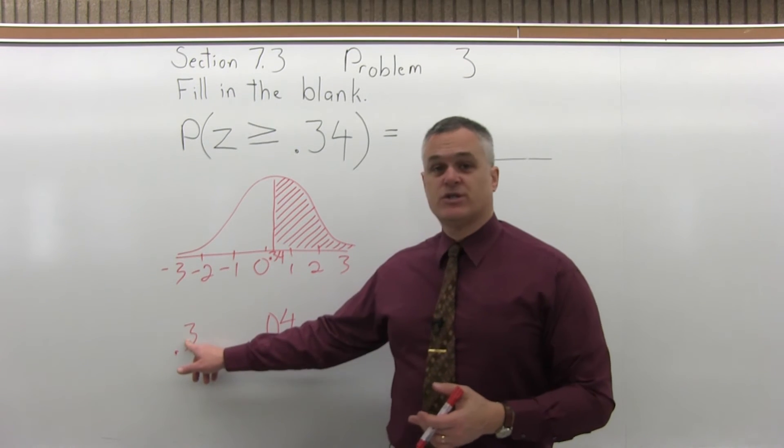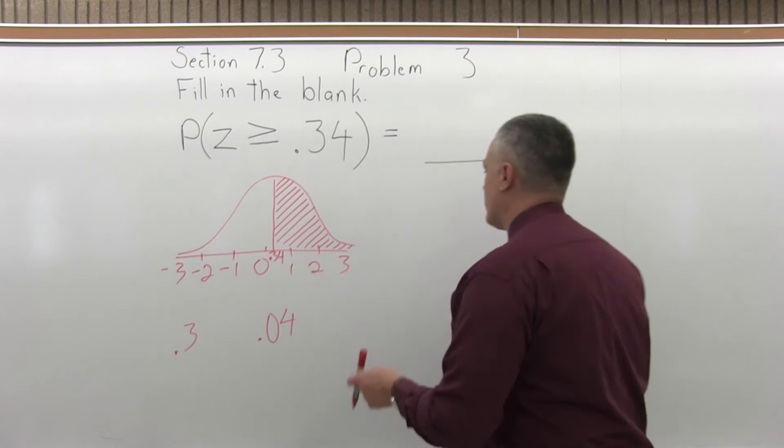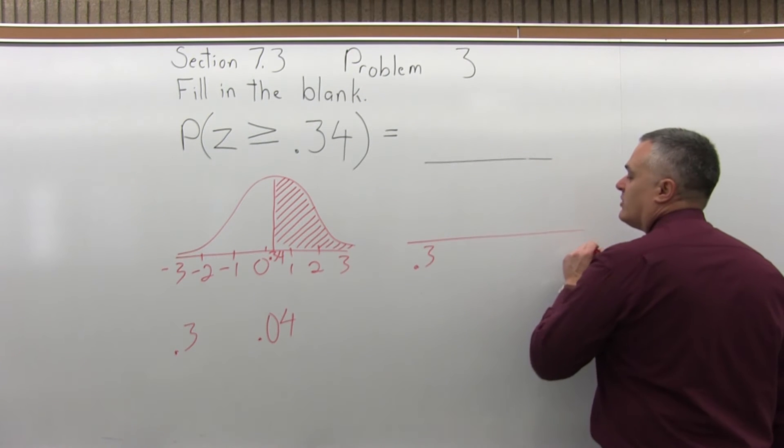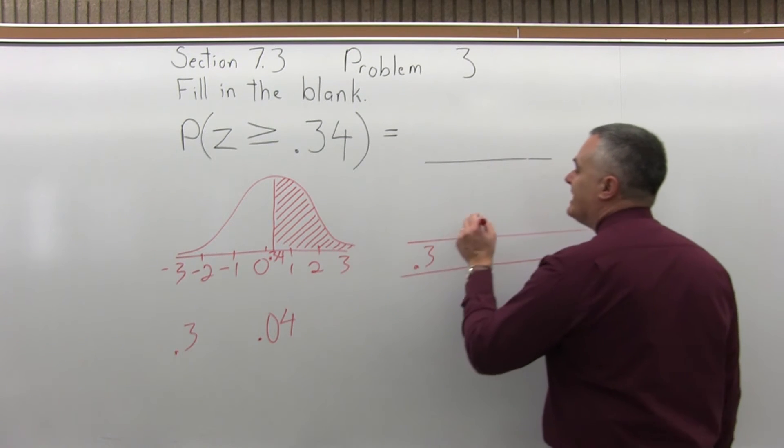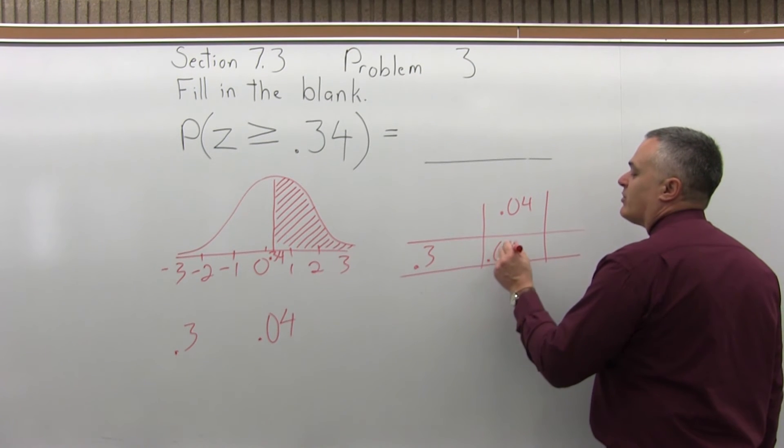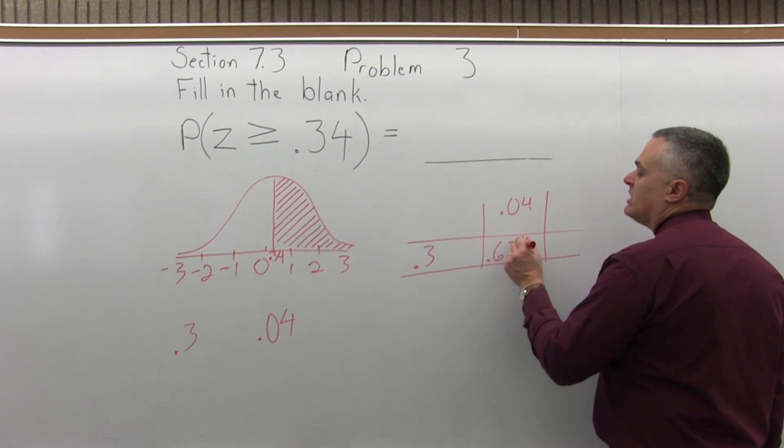We want to go to the positive portion of the chart, because we're dealing with a positive value. You want to go to the .3 row, which is up near the top of the chart. And you want to see where that .3 row intersects with the .04 column. And it will intersect at .6331.